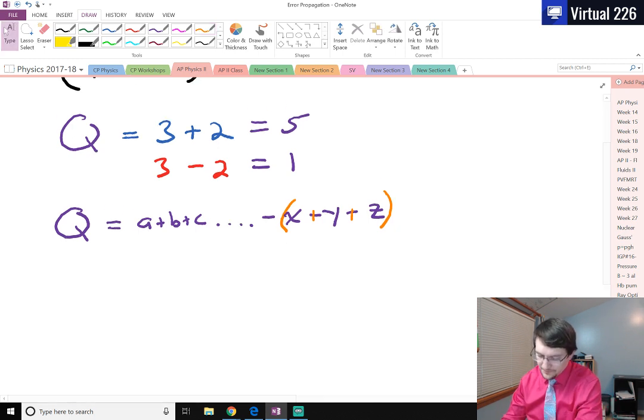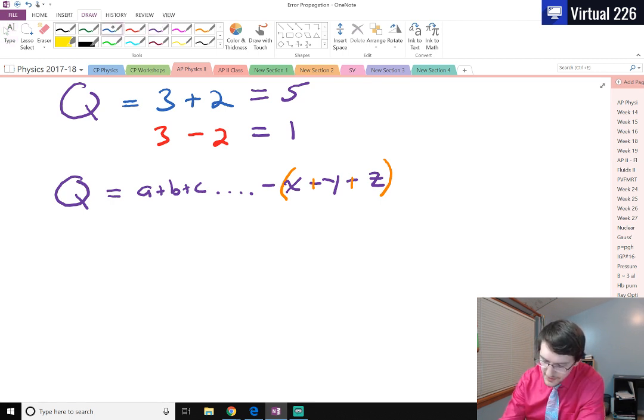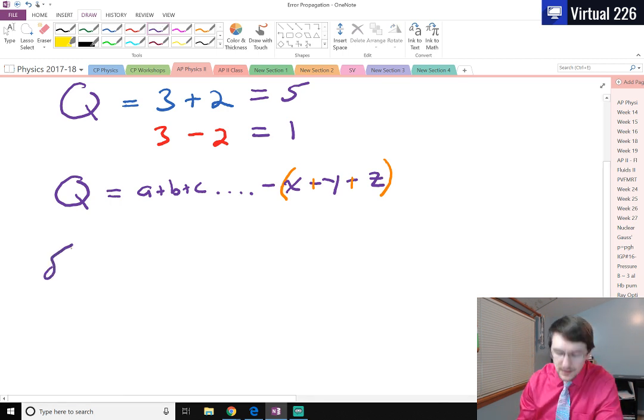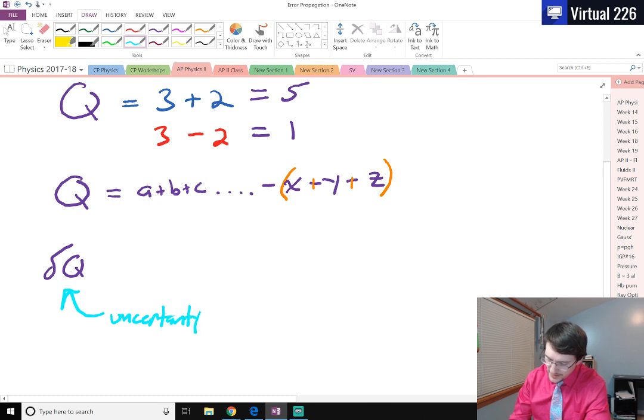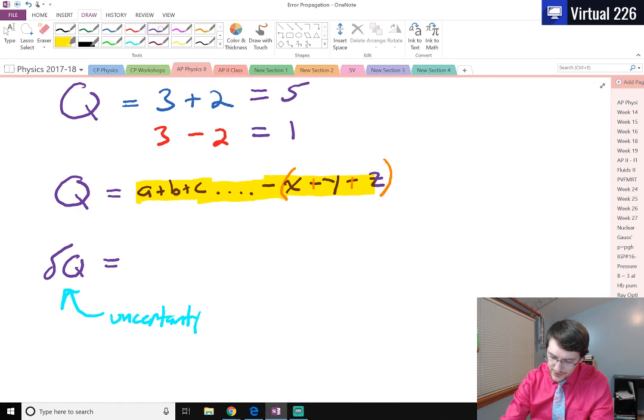The deviation of Q, because each of these values has some error in that measurement, means that the deviation of Q can be found. We're going to use a lowercase delta symbol, I'll call this del as shorthand. This deviation, this uncertainty in Q, has to be found by adding the uncertainties of each of these measurements in what's known as quadrature.